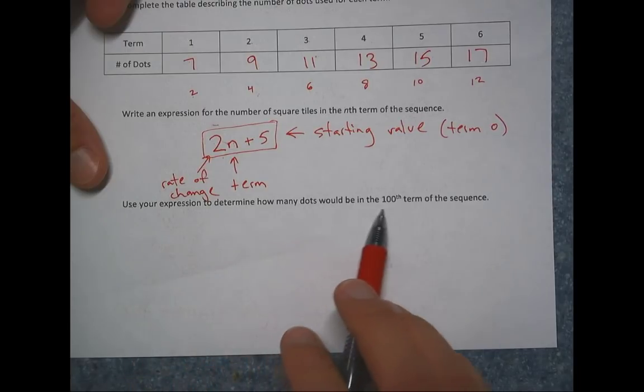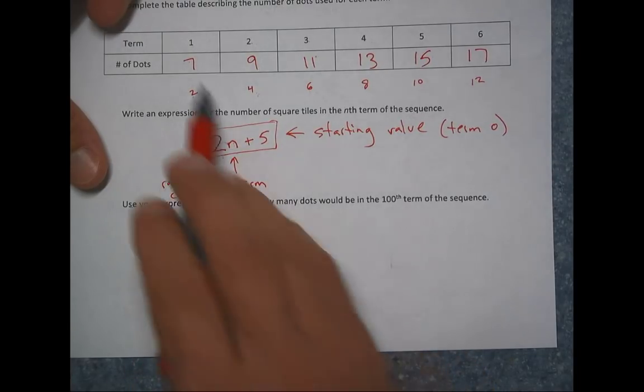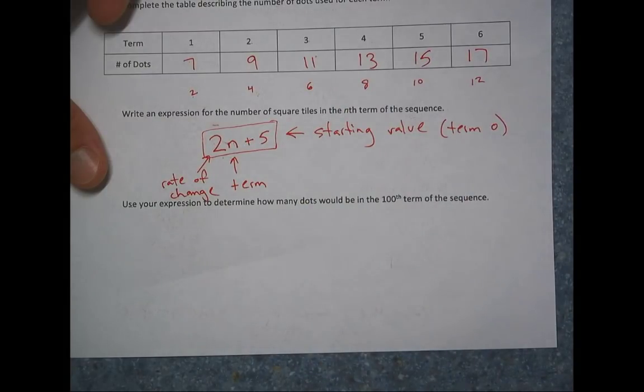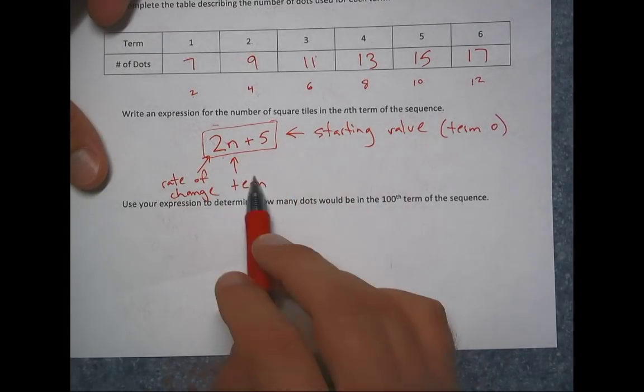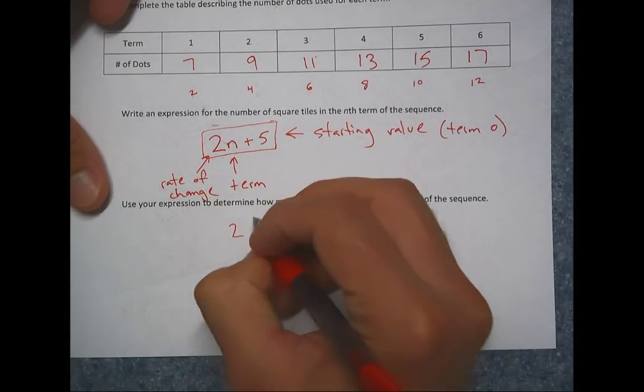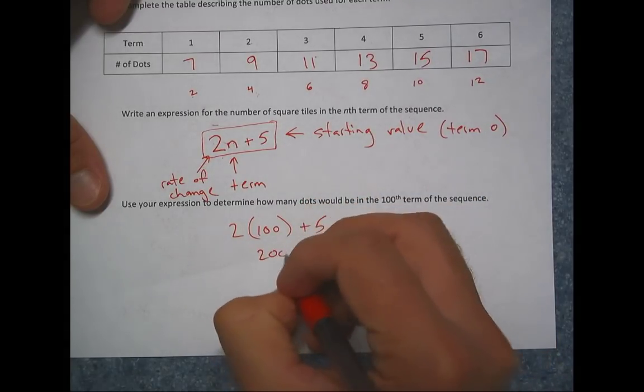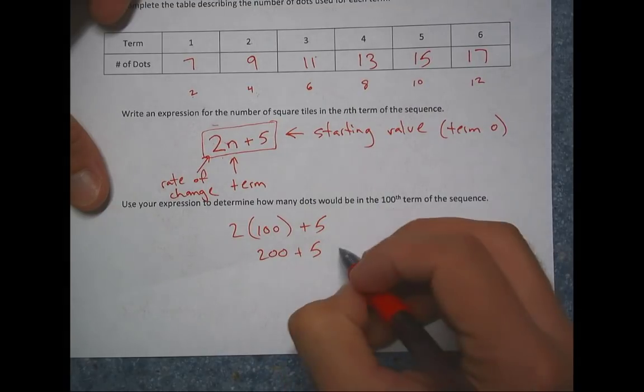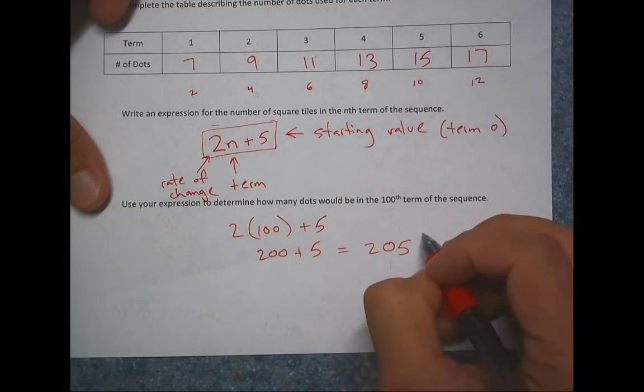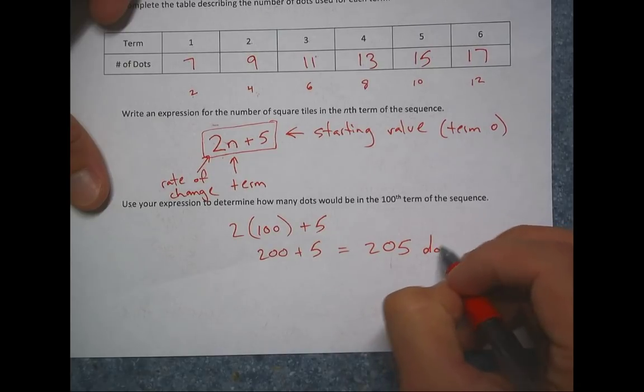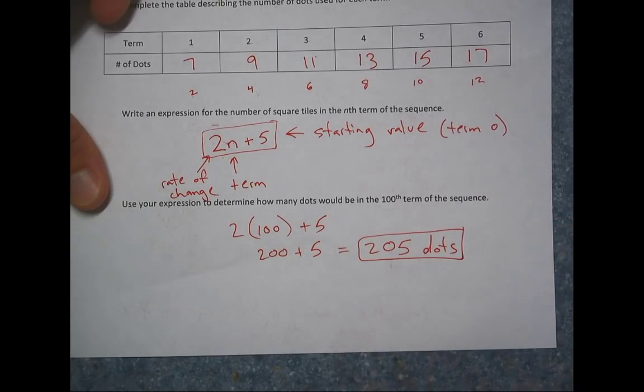Use your expression to determine how many dots would be in the 100th term of this sequence. So if I wanted to have 100 of these, I don't want to draw the pictures and I don't want to sit here counting by twos all the way up. So all I have to do is use my expression and plug 100 in for n. So two times 100 plus five, it's 200 plus five. So it's 205. There would be 205 dots in the 100th term. See how much time that saved me? So if I can write this expression, I can now calculate however many dots or in any term that I choose.